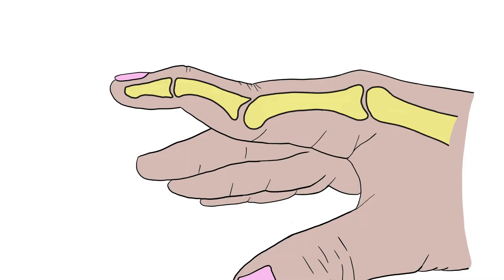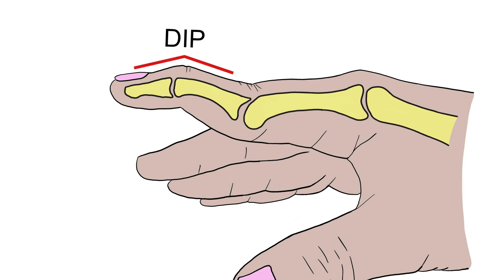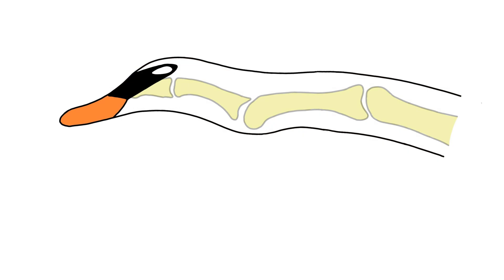A swan neck deformity is where the middle joint of the finger — the PIP joint — bends backwards the wrong way, a position called hyperextension. And then the end joint, the DIP joint, adopts a flexed position. So overall, the finger resembles the position of a swan's neck. If you have a swan neck deformity, you might struggle with gripping, making a fist, and with fine dexterity activities. The PIP joint might also snap or flick suddenly from the hyperextended position to the flexed position when you try to make a fist. Swan necks can be painful, but not usually.